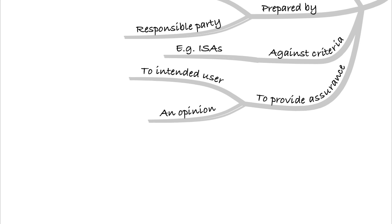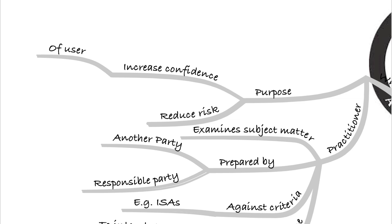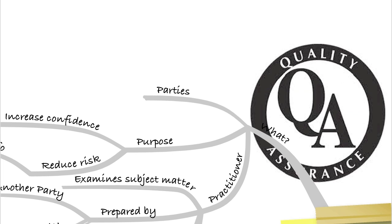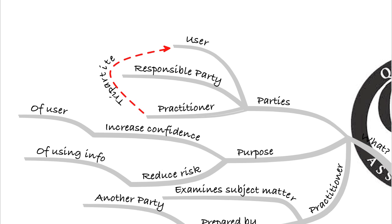It's not just audit — there are other types of assurance engagement. The purpose of an assurance engagement is to increase the confidence of the user in using the information. By the auditor saying it's fine, we can have confidence in using that information, which reduces the risk of using it. The parties involved in an assurance engagement are the user, the responsible party who prepares the financial statements, and the practitioner. This is called the tripartite arrangement.